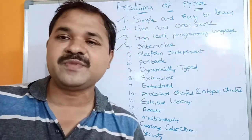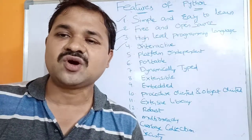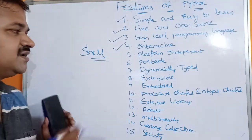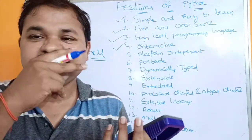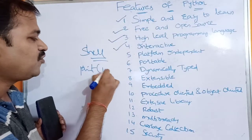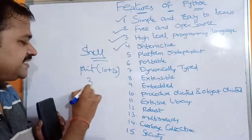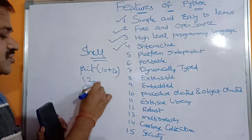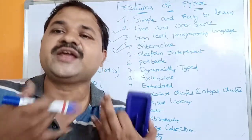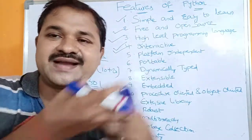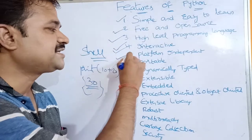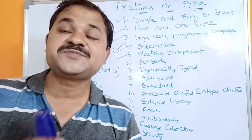The next feature is that Python is an interactive programming language. Python is called interactive because it uses a shell — if you give any command, you get the output immediately. For example, if you write the statement print(10 + 20), you will get 30 as the output directly. There is direct interaction between the shell and the programmer.